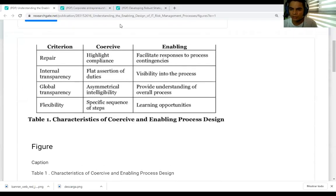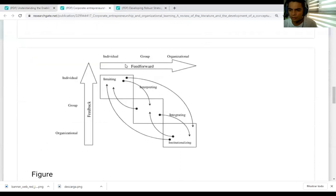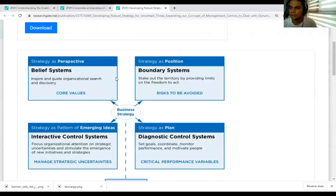So I think I can start in this one. I think the levers of control framework is very famous. It was proposed by Robert Simons from Harvard in 1994. It is very, very famous and popular. It's the same guy who designed the balance scorecard.